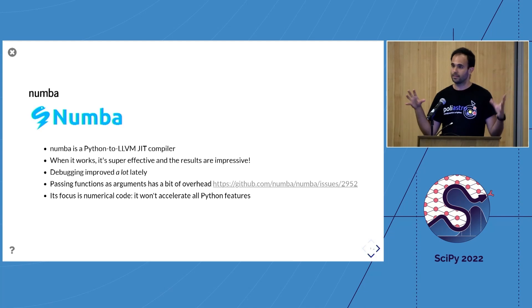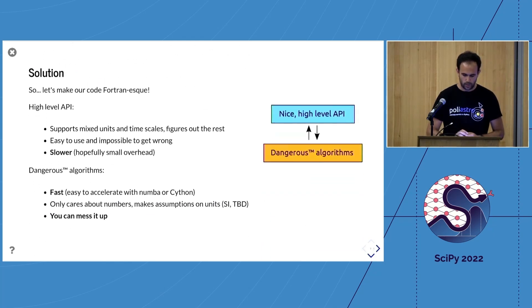Numba is a just-in-time compiler that turns your chunk of numerical code into something that is really, really fast. When it works, it's really magical, but there's only a subset of the language that is supported—you don't have introspection and objects and things like that. Your code ends up being a little bit Fortran-esque in a sense. What we ended up doing is separating the code base in two layers. On the top layer, there's the high-level API that gently warns you if you're making mistakes with the units and takes care of everything for you, but it has a small performance overhead. What this high-level API does basically is strip the units away, transform anything into NumPy arrays or floats, and pass it to the dangerous algorithms that are accelerated with Numba. Therefore, you can mess it up if you mess up with the units, but they are as fast as they get.